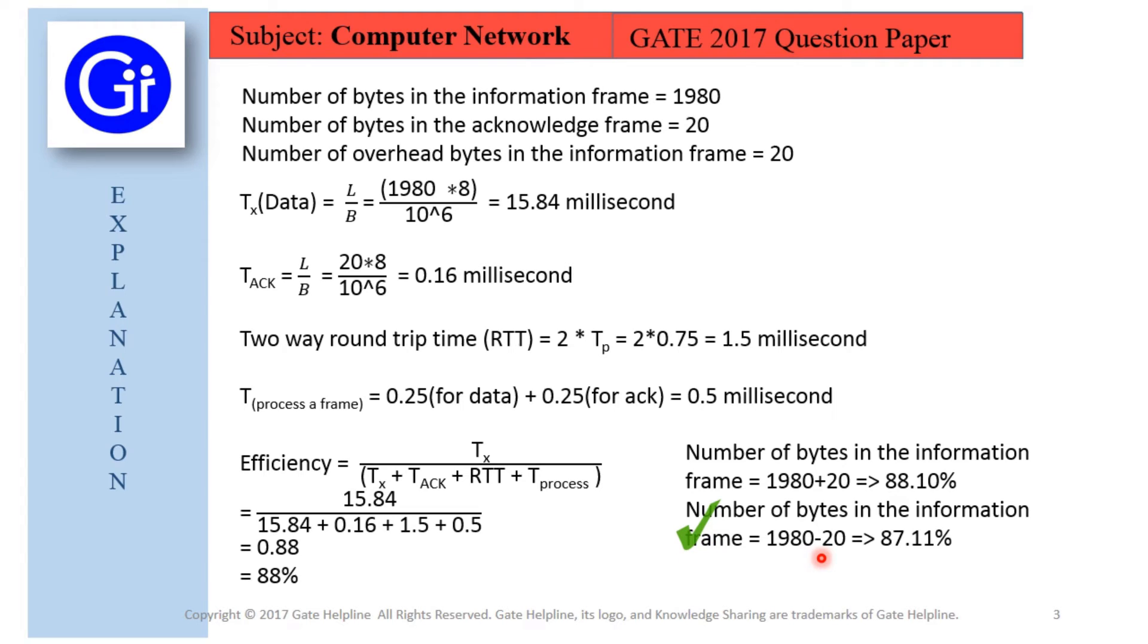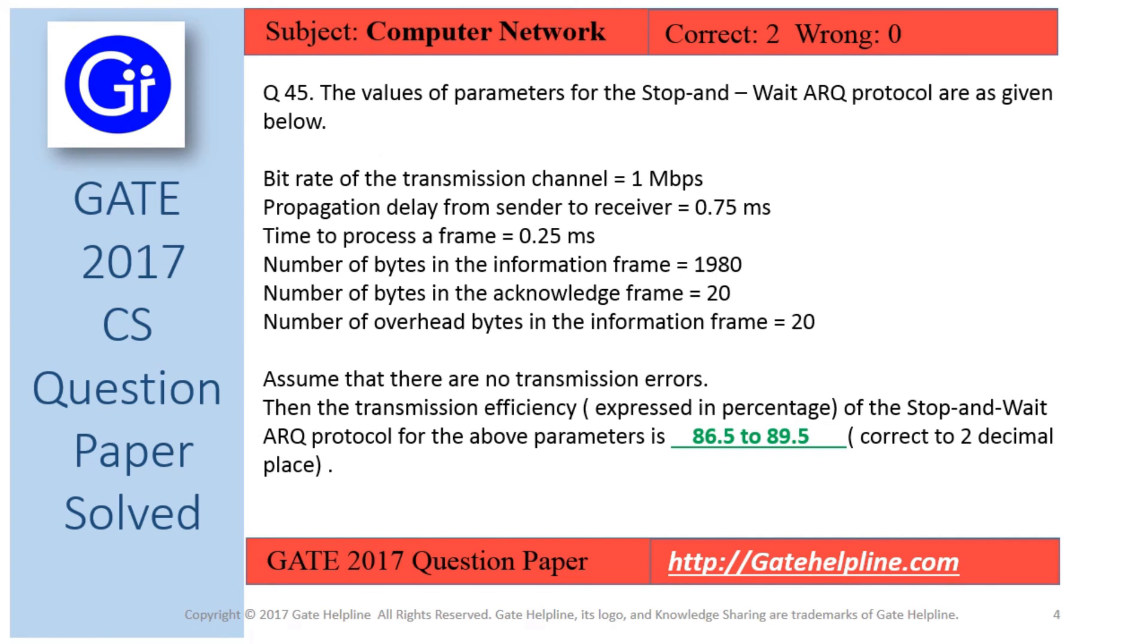But according to answer keys which are given from GATE 2017, they have included this entire range, means if you have given answer from any of these options, your answer is correct. So as we have discussed three different scenarios, the range given to this answer is 86.5 to 89.5.